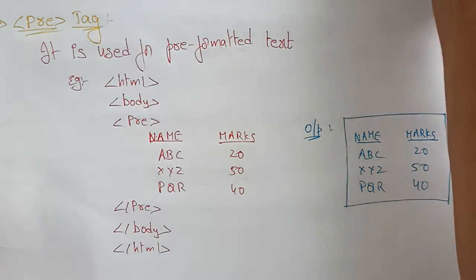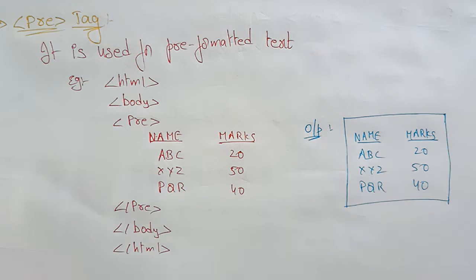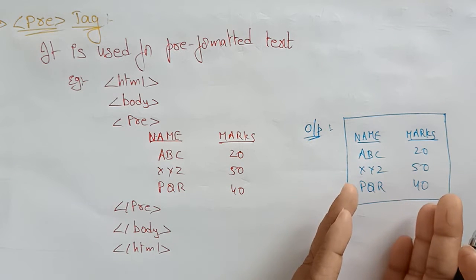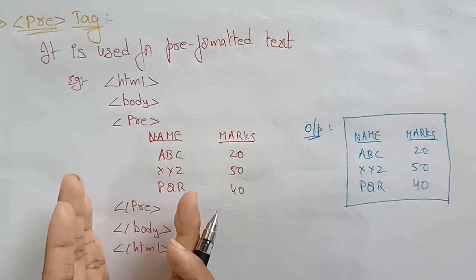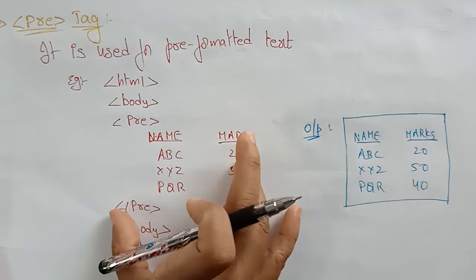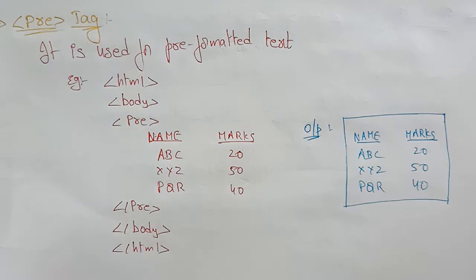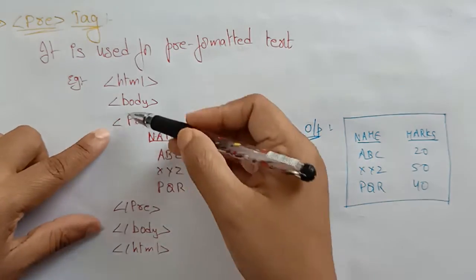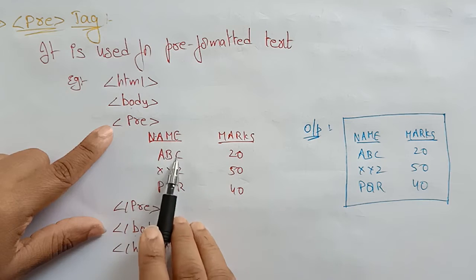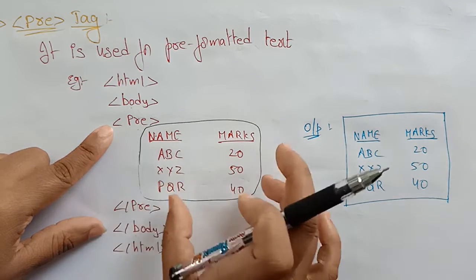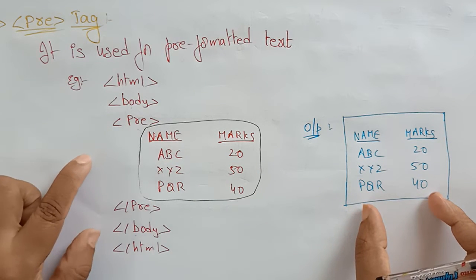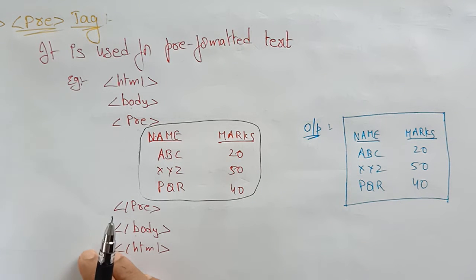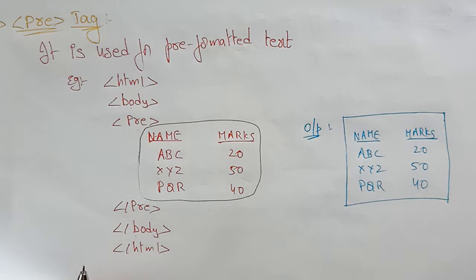Next is the pre-tag. The pre-tag means whatever format or spacing you have written in the HTML document will appear exactly on the web page. For example, if you write 'a' here, 'b' here, and 'c' here in a certain layout, the same format will appear in the output. It is used for pre-formatted text — whatever is pre-formatted will be printed exactly on the web page.